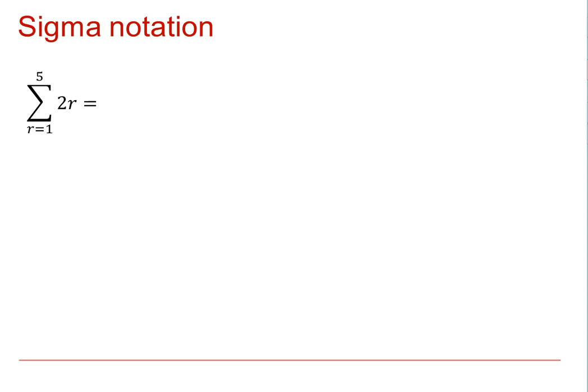So we will have 2 times R, which initially is 1, and then add 2 times 2, where R is 2, and so on, up until the point when R reaches that upper limit of 5.